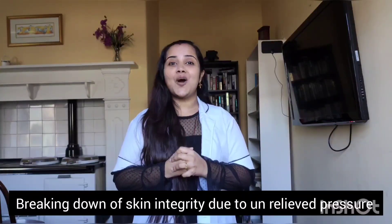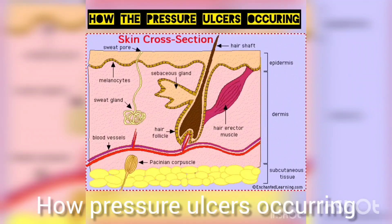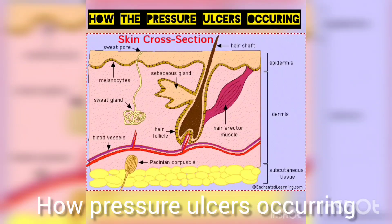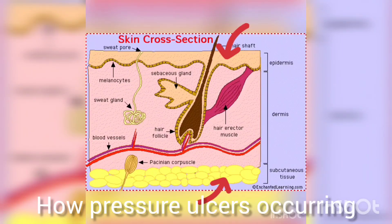Now let's see how pressure ulcer is occurring. The skin has epidermis, dermis, and subcutaneous tissue. Under the subcutaneous tissue there will be bones. In the bony prominence area, pressure is always exerted into the skin's layers. When a person is sitting or lying down for a long time, pressure comes from outside, and there is also natural pressure from inside. These two pressures together squeeze the middle area, pinching off blood supply to the epidermis and dermis, causing pressure injury.